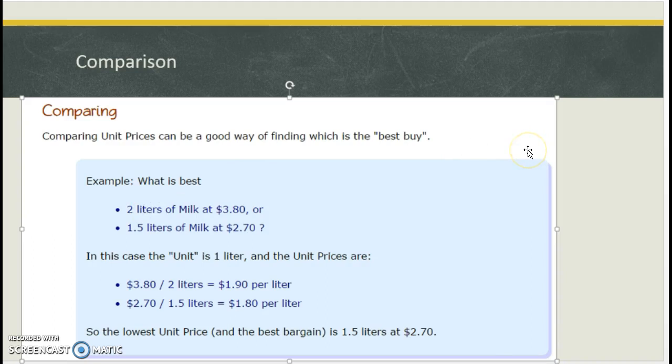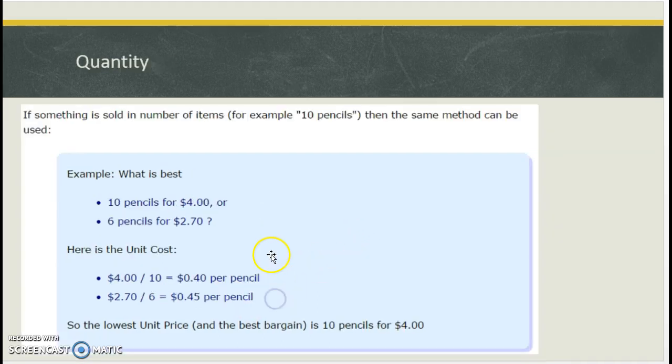So what's a better deal here? 2 liters of milk at $3.80 or 1.5 at $2.70. Quick division, $3.80, $1.90, $2.70, $1.5. Actually turns out to be the better deal here, the $1.5.